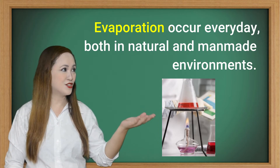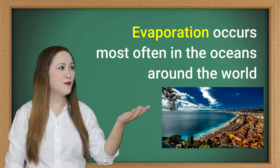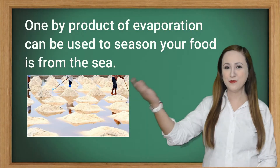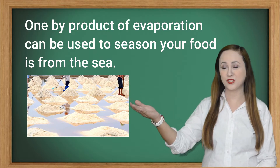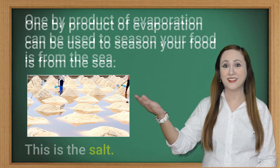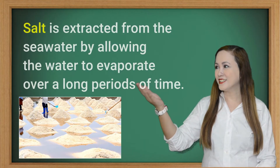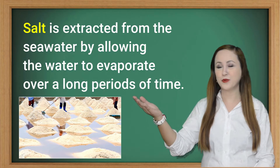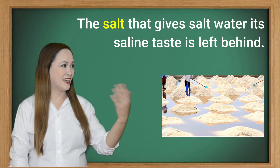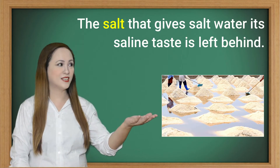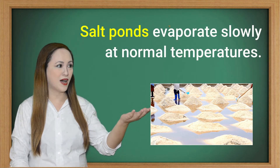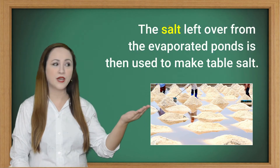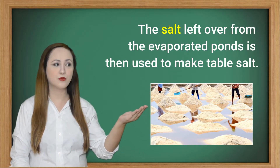What in natural and man-made environments? Evaporation occurs most often in the oceans around the world. One by-product of evaporation that can be used to season your food is from the sea — this is salt. The salt is extracted from the seawater by allowing the water to evaporate over long periods of time. The salt that gives salt water its saline taste is left behind. Salt ponds evaporate slowly at normal temperatures, and the salt left over from the evaporated ponds is then used to make table salt.